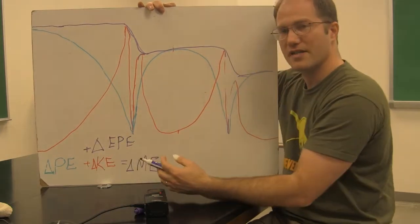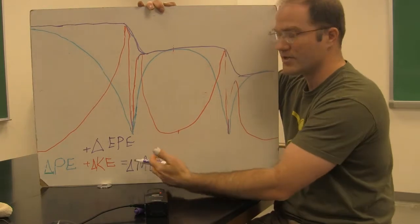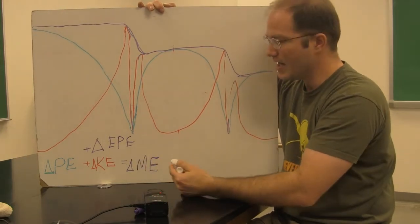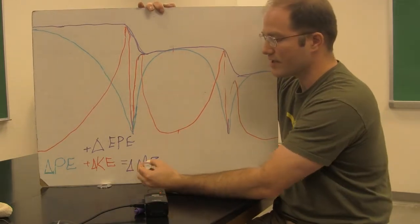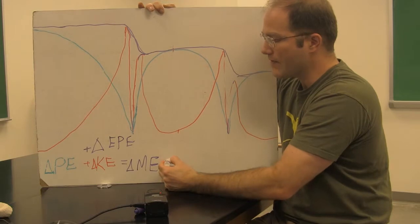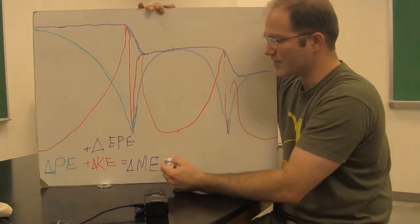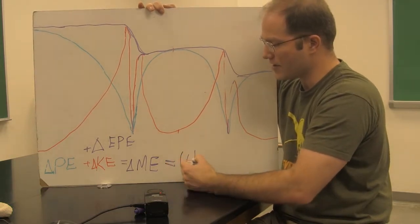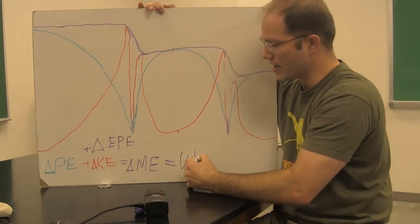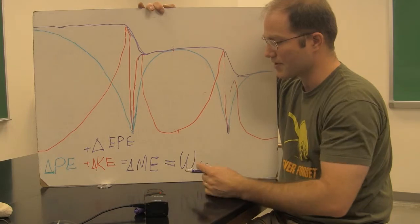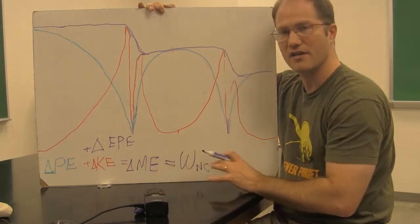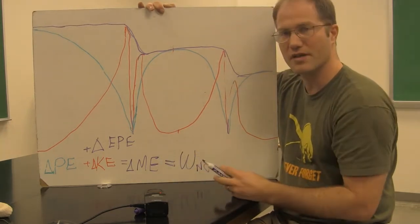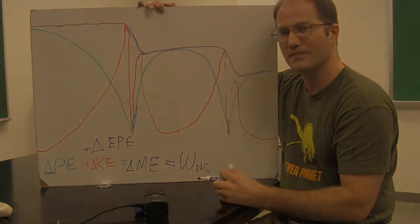We've noticed that the change in mechanical energy equals the change in potential plus the change in kinetic, and we also now have this third term: plus a change in elastic potential energy, EPE. Those three things sum up to the change in mechanical energy. If the change in mechanical energy is not zero, then we know that's due to the fact that there was work done by a non-conservative force — so a change in mechanical energy equals the work done by a non-conservative force.